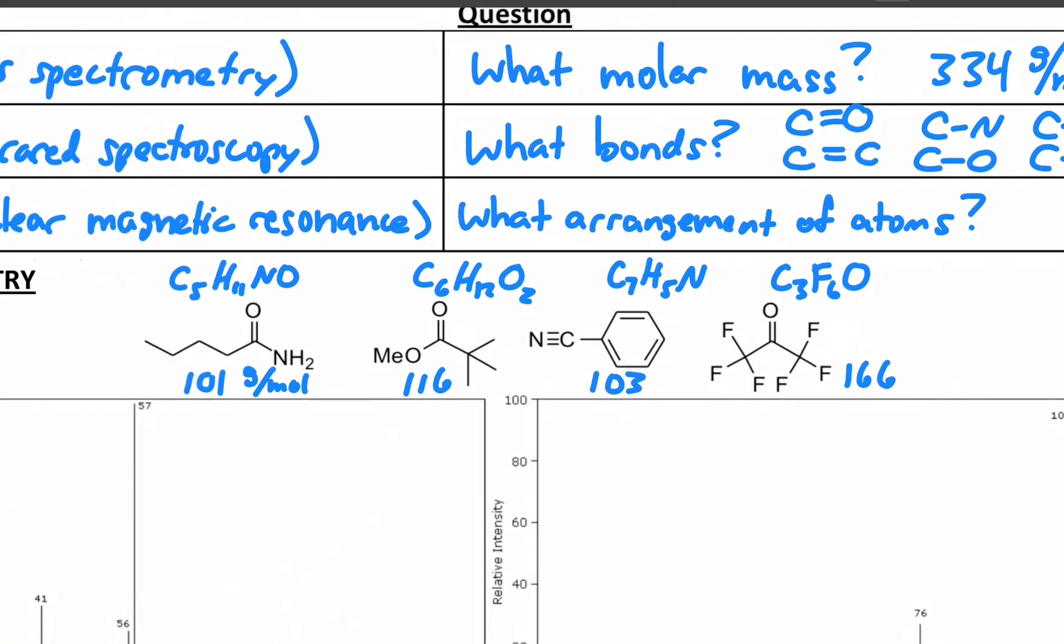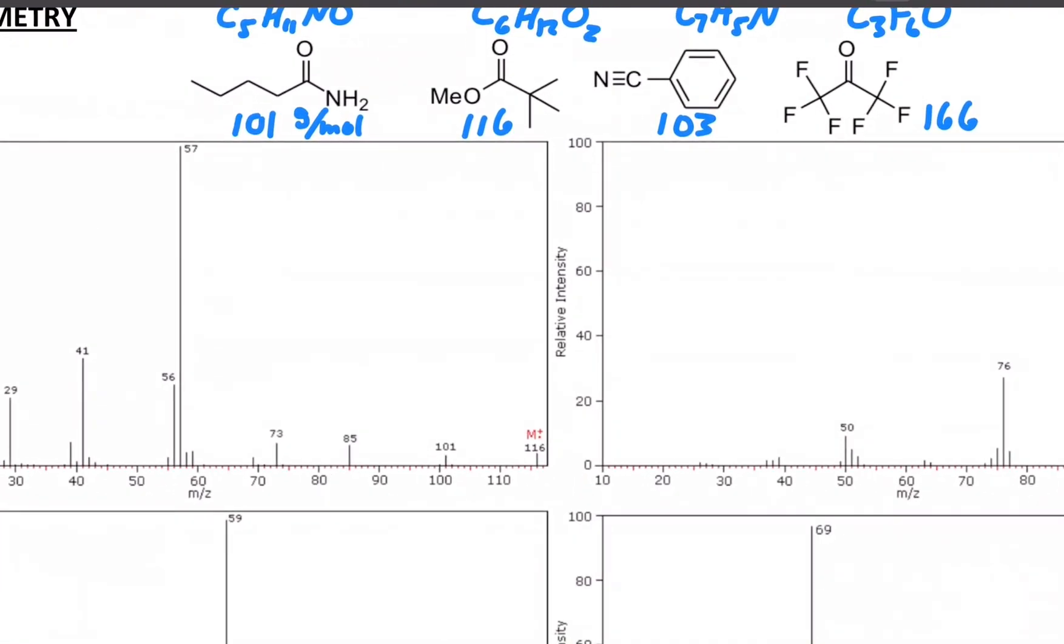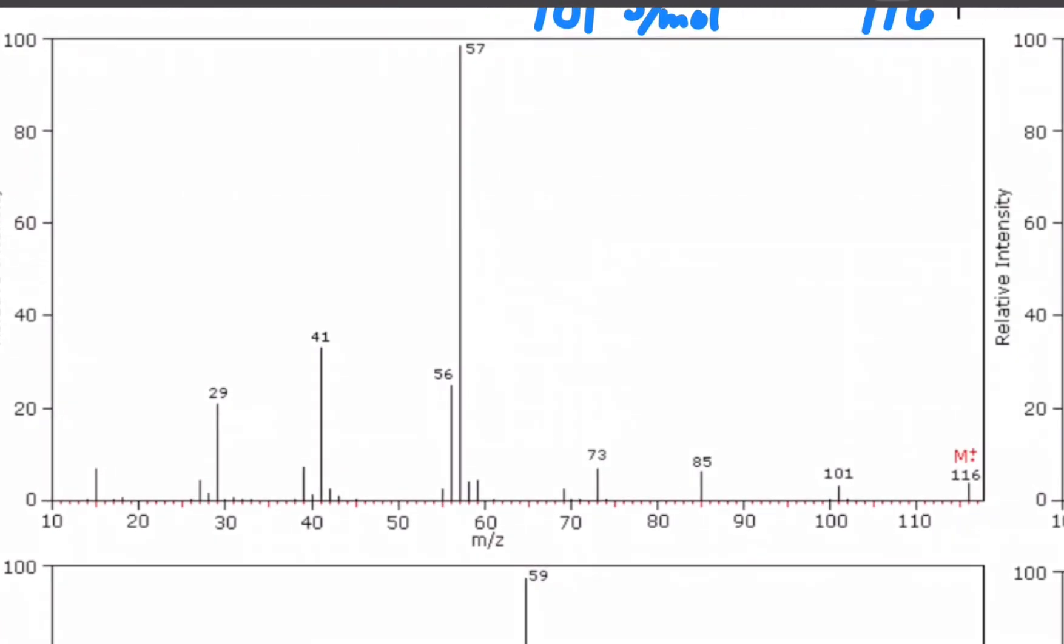So those molar masses, in an ideal case, would be seen in the mass spectrum. Let's just zoom in on the very first one and see if we can figure it out. If you look all the way to the right, this 116, that's the highest number. It's called the parent peak. It's the highest number recorded.